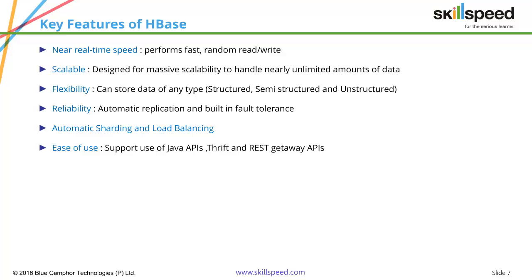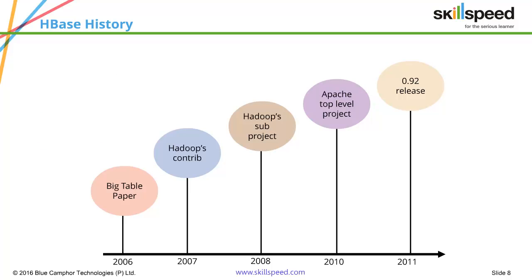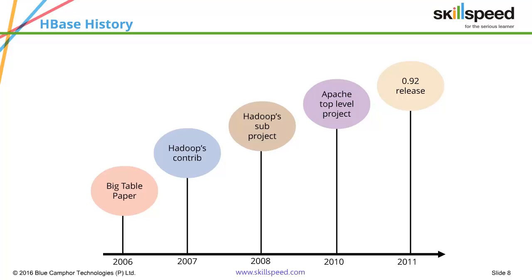Regarding the history of HBase: in 2006, Google published a paper called the Bigtable white paper, revealing their own NoSQL database called Bigtable. In 2007, Hadoop contributors started building a NoSQL database based on Bigtable. In 2008 it became a subproject of Hadoop, and in 2010 it became a top-level Apache project. In 2011 the first HBase release — version 0.92 — was made available, making HBase relatively new.